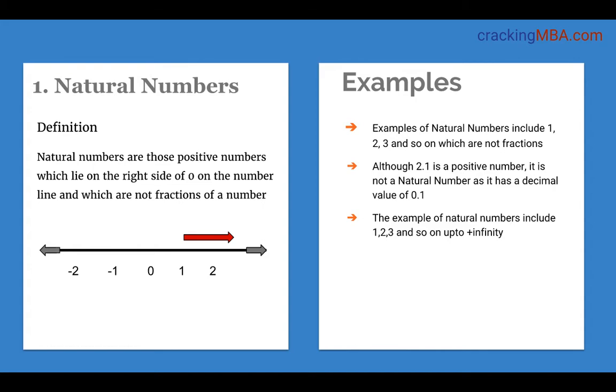First starting with the natural numbers. On the real number line, natural numbers represent all those numbers on the right side of zero starting from 1, 2 and so on up to plus infinity but they cannot be fractions of a number. Hence 2.1 is a positive number but it is not a natural number. Other examples of natural numbers include 1, 2, 3 and so on up to positive infinity.